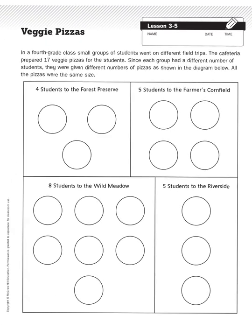In a fourth grade class, small groups of students went on different field trips. The cafeteria prepared 17 veggie pizzas for the students. Since each group had a different number of students, they were given different numbers of pizzas, as shown in the diagram below. All the pizzas were the same size.